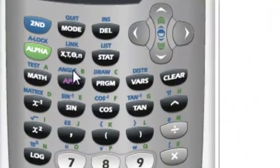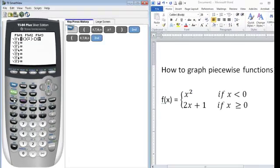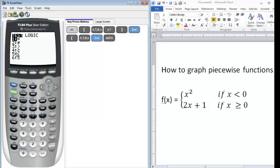In order to access your inequalities, we want to go to the test menu, which is right above the math button. Once again, it's in blue, so we have to press 2nd to access that menu. Less than is option number 5, so you can scroll down to number 5 or just type in the number 5.